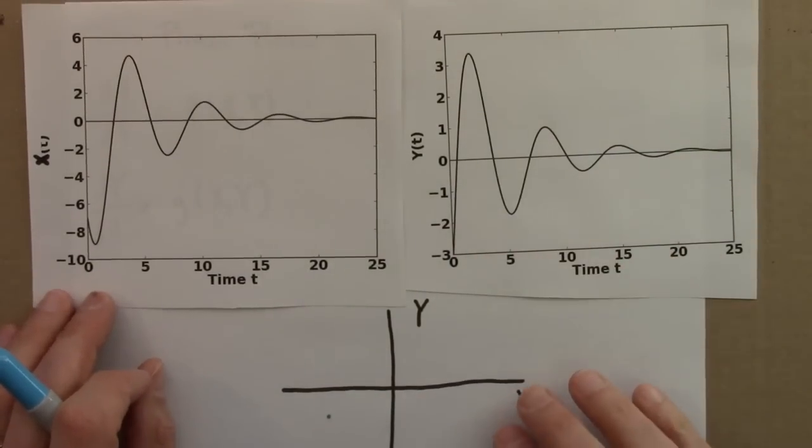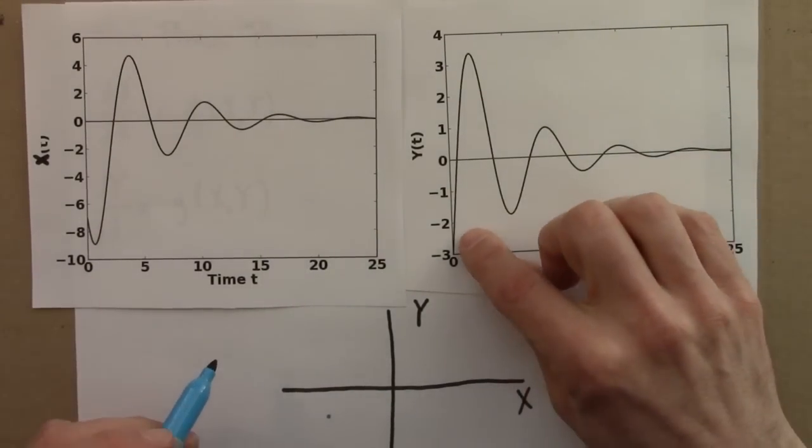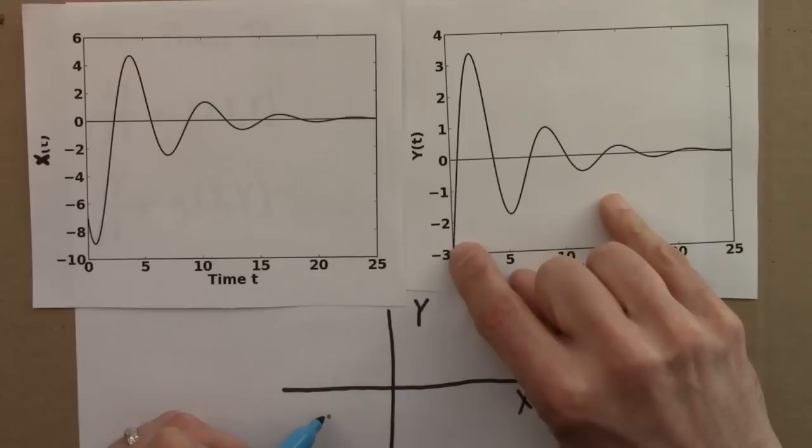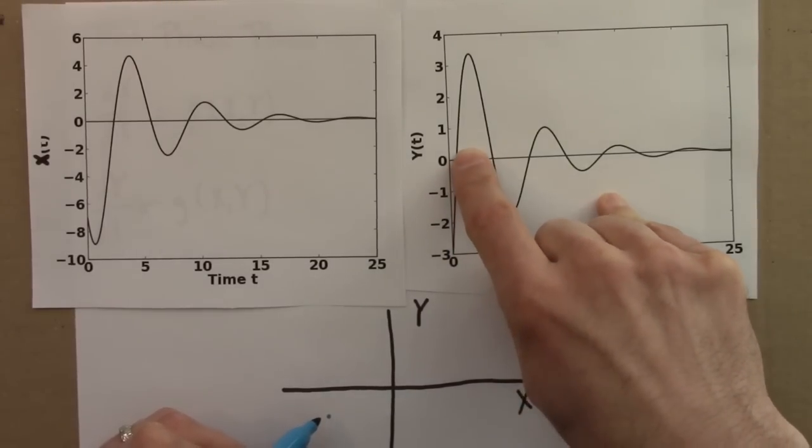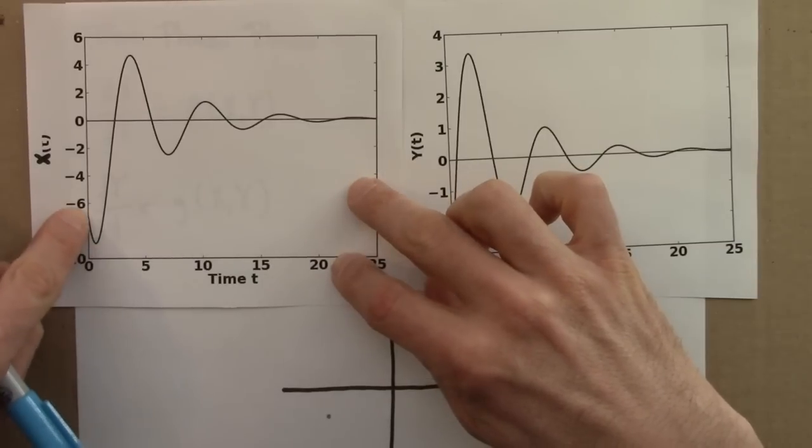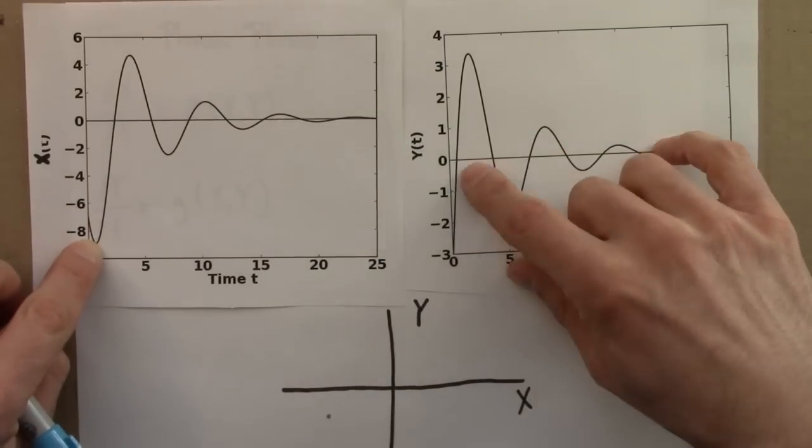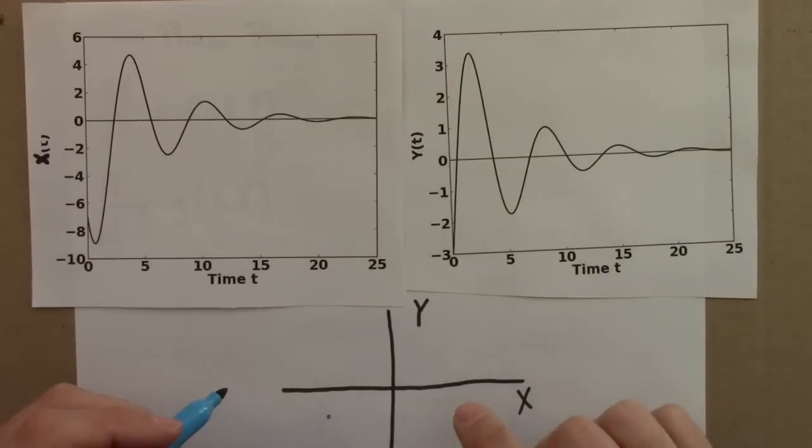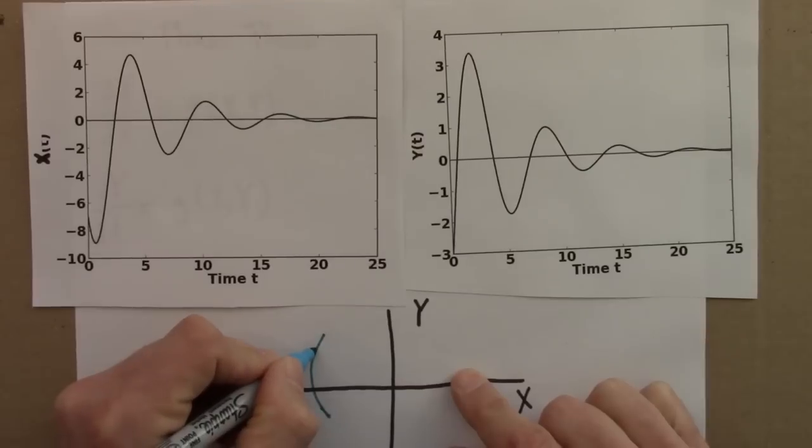So let's see. The first thing that happens is y increases and x is decreasing, x gets a little bit more negative while y increases. So that's going to end up looking something like that. You can have that sort of motion.